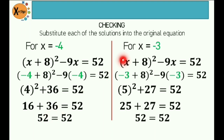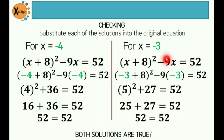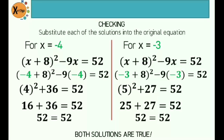Next, for x equal to negative 3, write the original equation: quantity x plus 8 squared minus 9x is equal to 52. Then substitute the value for x: quantity negative 3 plus 8 squared minus 9 times negative 3 is equal to 52. The sum of negative 3 and 8 is positive 5, squared is 25, plus 27 is equal to 52. So 52 is equal to 52 — another solution. Therefore, both solutions are true. So any questions or clarifications before we proceed?